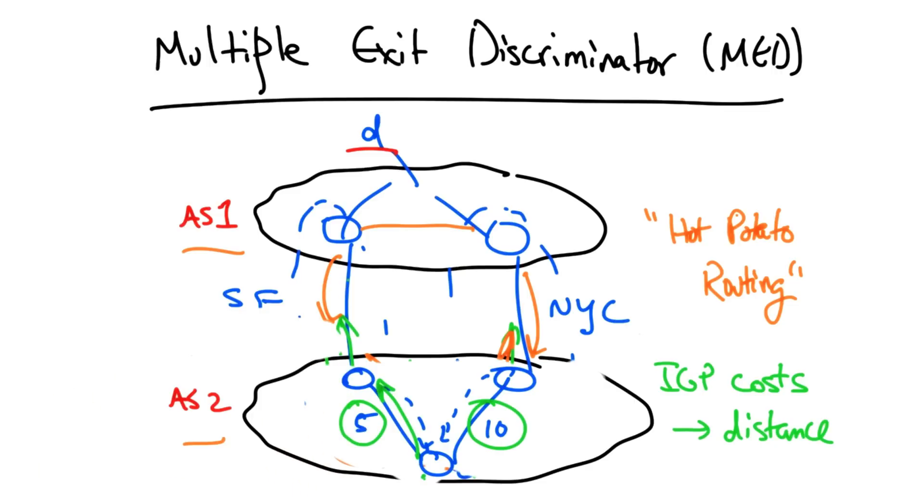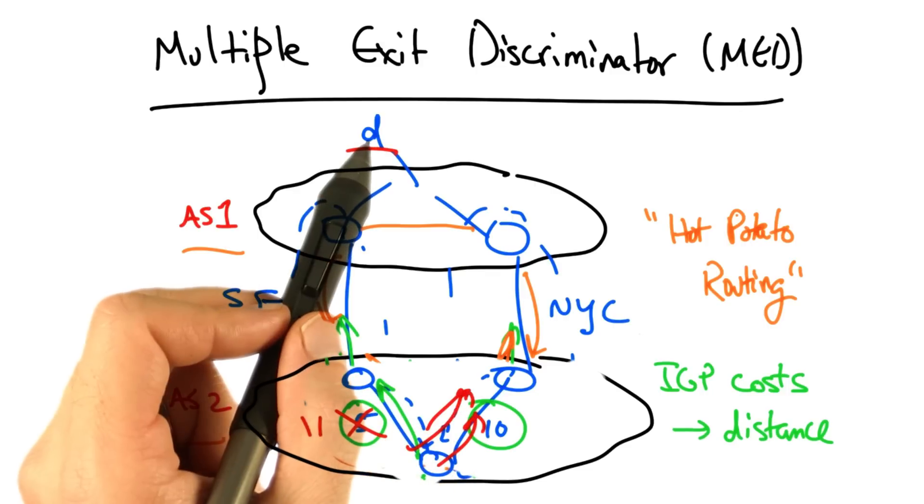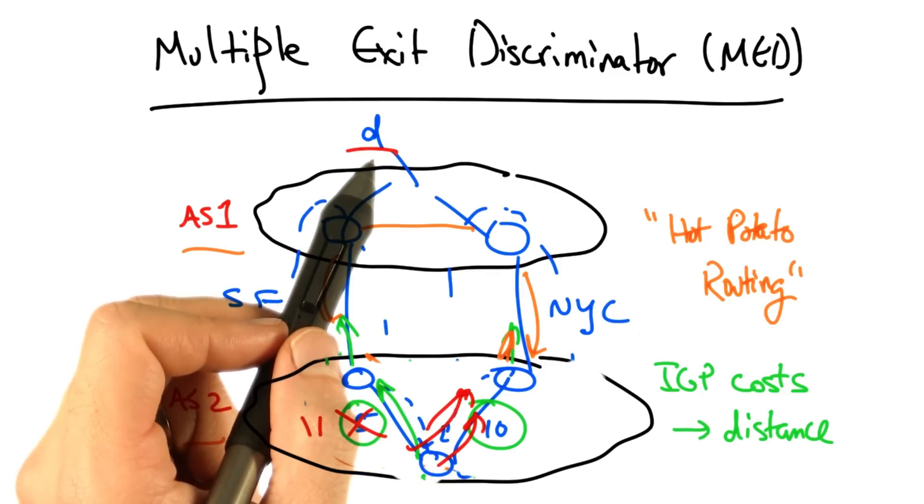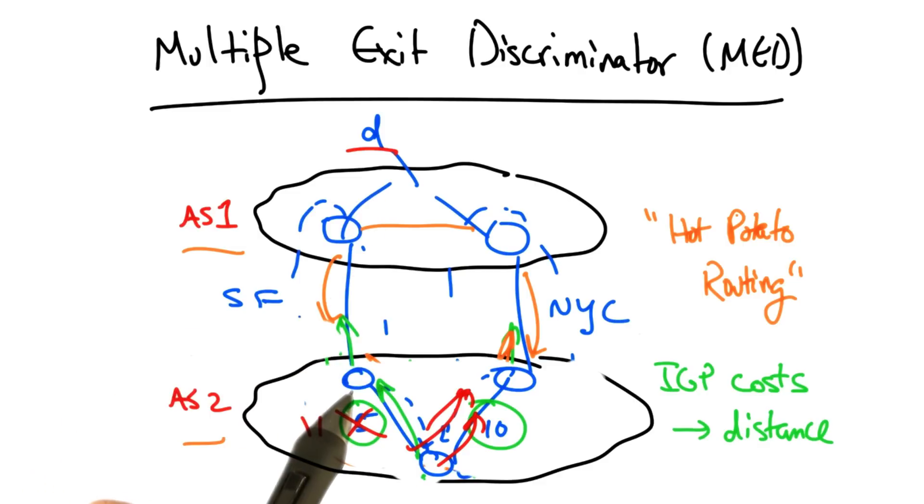One problem with hot potato routing is that a very small change in IGP path costs can result in a lot of BGP routing changes. Remember that it's probably not just one destination being routed through the San Francisco egress, but maybe tens of thousands of routes. So a single IGP path cost change can result in rerouting of tens of thousands of IP prefixes in BGP.